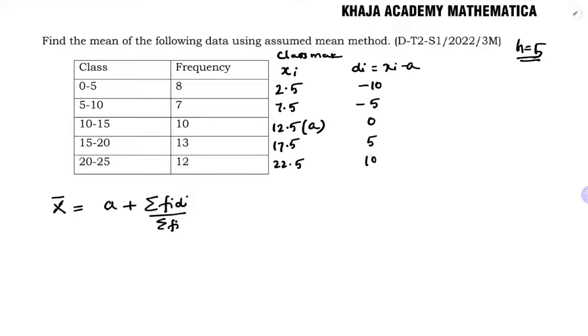Now we need to calculate fi di. You need to multiply these two fi and di columns. 8 into minus 10 is minus 80. 7 times minus 5 is minus 35. 10 into 0 is 0. 13 times 5 is 65. 12 into 10 is 120.